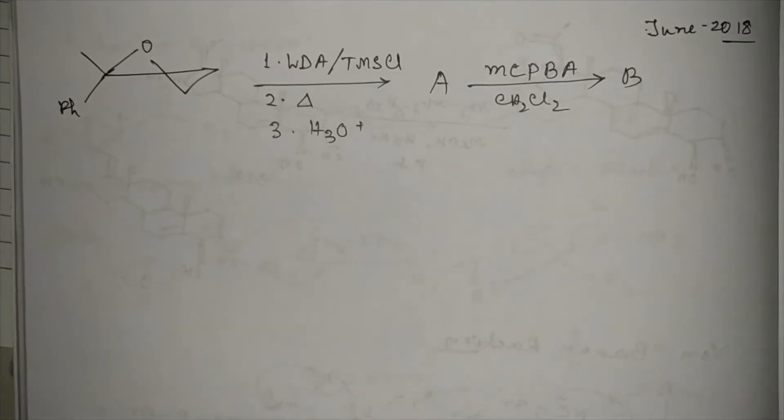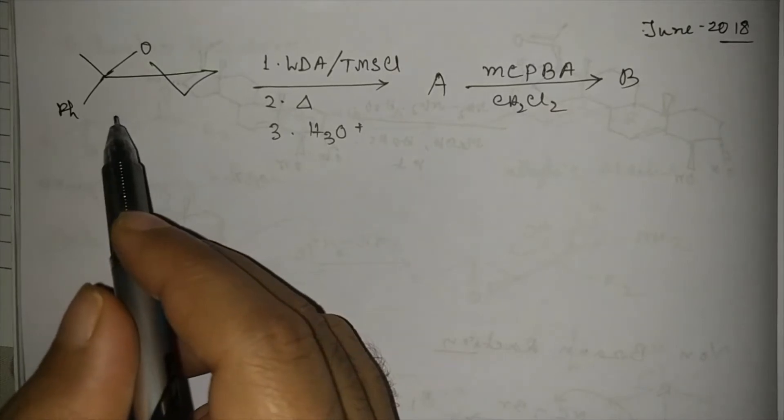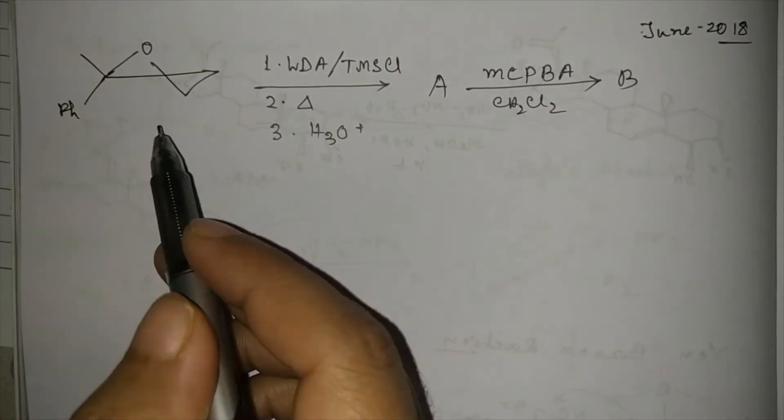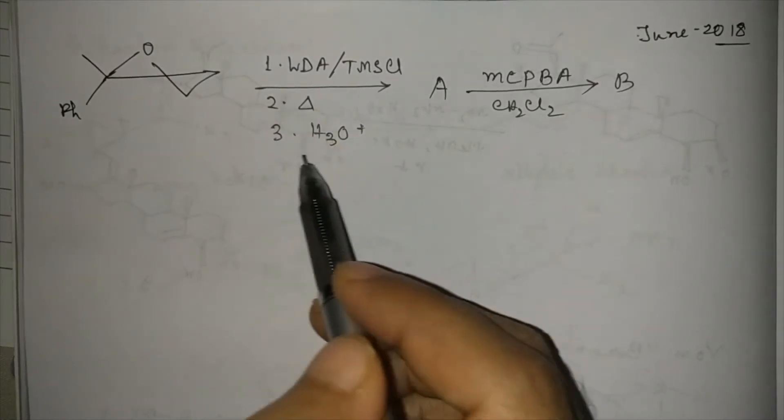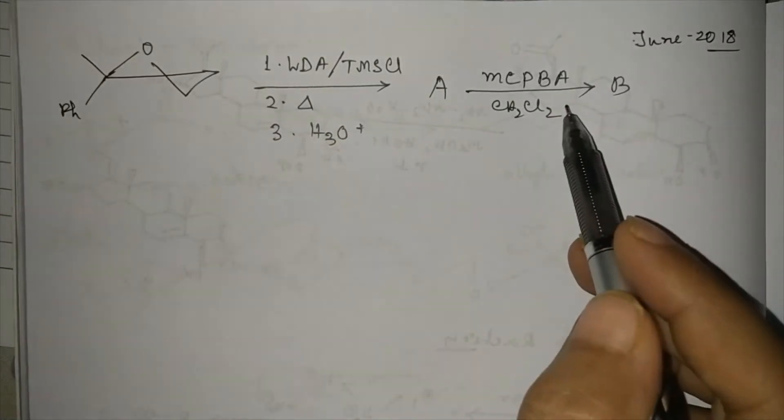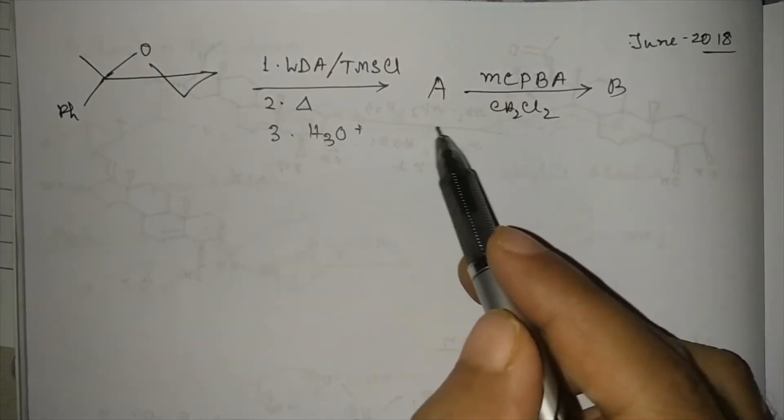Hi guys, how are you? Today I am going to discuss one important question. This is an oxaspiro [2,2] pentane system which is treated with LDA/TMSCL, then heat, and then H2O+ to give product A, which is treated with metachloroperoxybenzoic acid to give B. We have to determine A and B.